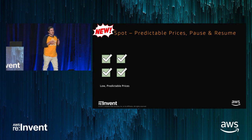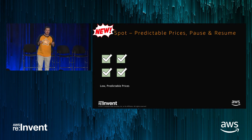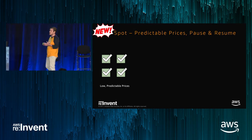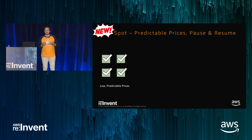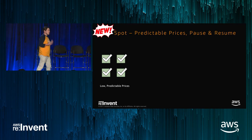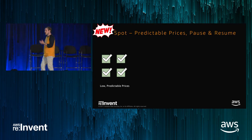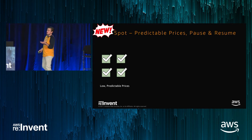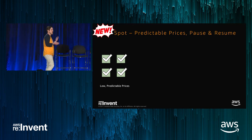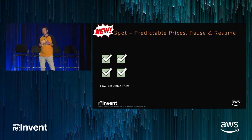The new pricing model was designed to deliver low, predictable prices to customers. We still use supply and demand to determine prices, but instead of looking at capacity right now and allowing the price to fluctuate potentially quite significantly in a short period of time, we're now looking at supply and demand over a longer period of time. This allows you to launch an instance and know with good confidence what you're going to pay for the next 6, 12, or 24 hours. You're no longer going to see the price move rapidly — when it does change, it'll change in relatively small increments, plus or minus 10% throughout a daily period.